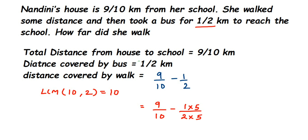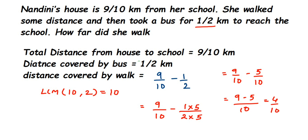So we have 9/10 minus 5/10. Now the denominators are the same, so we subtract the numerators: 9 minus 5 = 4, giving us 4/10. We can simplify: 4/10 = 2/5 km. So she walked 2/5 km. I hope this question is clear — if you have further questions or doubts, drop a comment. Thank you so much for watching!